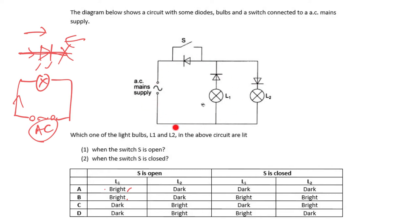When the alternating current tries to flow in the anti-clockwise direction, the current flows through bulb L1 and through this diode — which is forward biased, low resistance — and likewise the next diode is also forward biased with low resistance, giving a closed circuit. So L1 will light up and be bright. However, in the other parallel branch, the diode is reverse biased, resistance is very high, so no current flows and L2 will be dark.